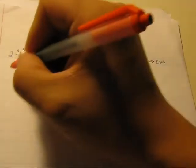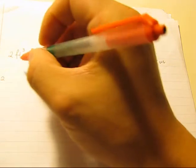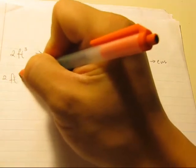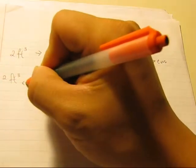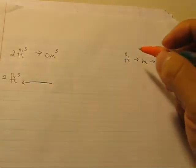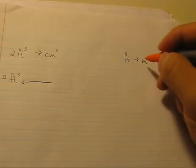So let's start off with what is given: two cubic feet, and we multiply it by a conversion factor. Now, what do we put in here? Well, let's go back to the relationship.